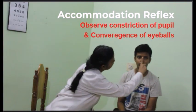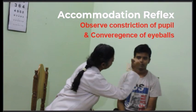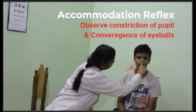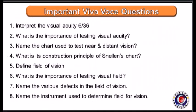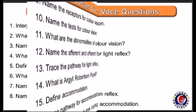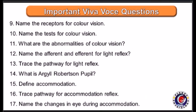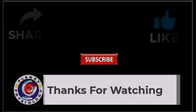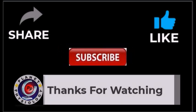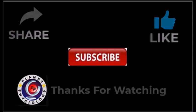Now we will do the accommodation reflex. The subject is asked to look at a distant point, and when instructed, to look at the examiner's fingertip held close. The pupil constricts when the gaze shifts to the near object. The procedure is repeated several times to observe the consistent pupillary response to accommodation.